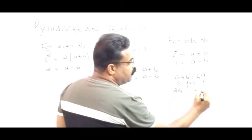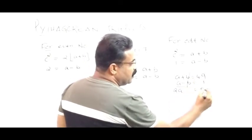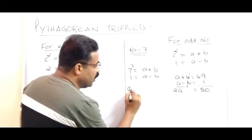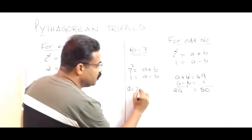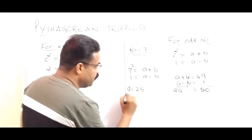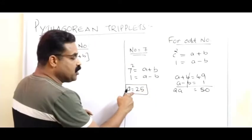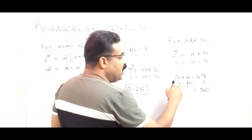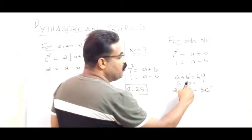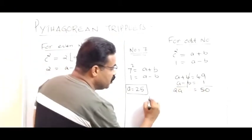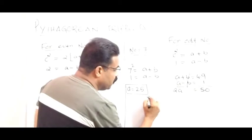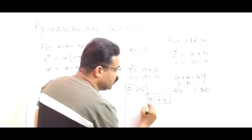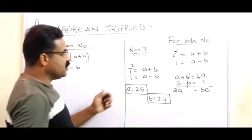Adding gives 2a = 50, so a = 25. Substituting back into a − b = 1, we get 25 − b = 1, so b = 24.